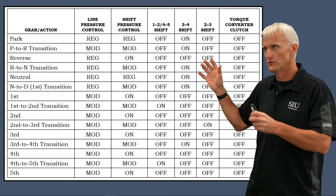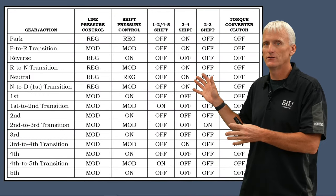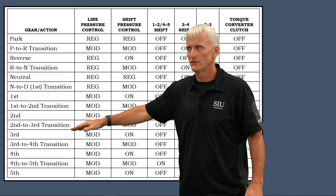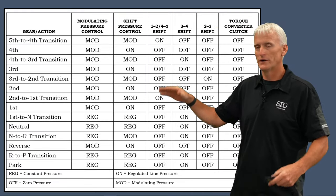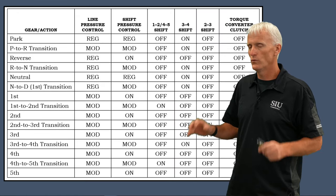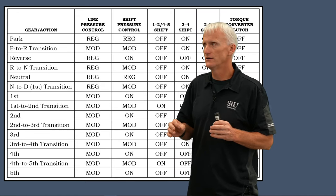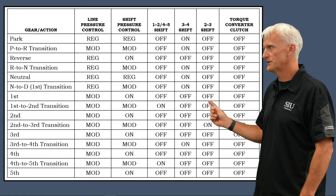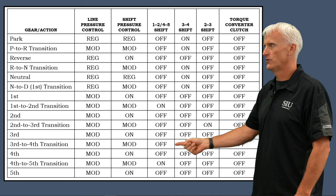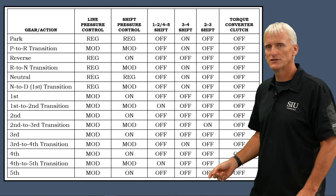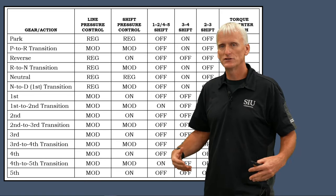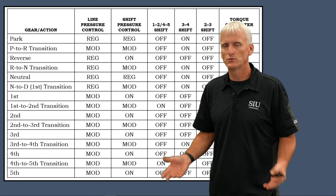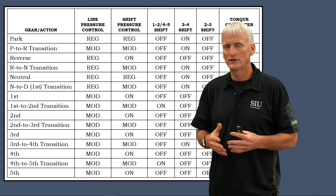This table shows what's happening to all solenoids while upshifting through first, second, third, and so forth. The key point is that the shift solenoids are off when you're in a gear — they only turn on when commanding a shift and during the transition phase. The next slide shows the same for downshifts.